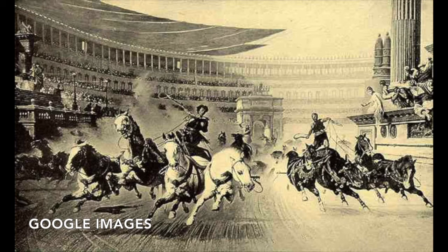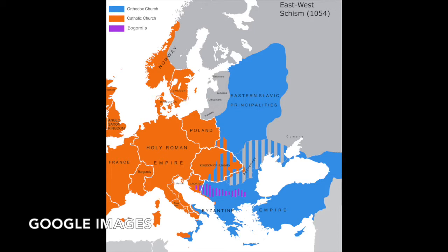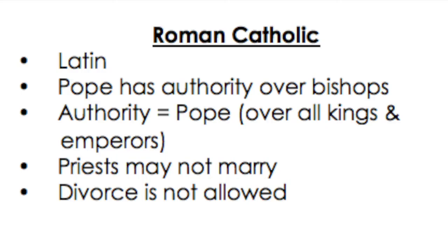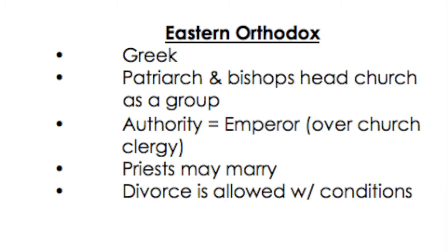The first split of the Christian church took place in 1054 CE, and is now known as the Great Schism. The church split into two halves. The west was now part of the Roman Catholic Church, and the east was now part of the Eastern Orthodox Church. The Roman Catholic Church was Latin, and the Pope had authority over the bishops and over all kings and emperors, while priests may not marry and divorce was not allowed. The Eastern Orthodox Church was Greek, and the patriarch and bishops headed the church as a group, and the emperor had authority over the church clergy. In the Eastern Orthodox tradition, priests may marry and divorce is allowed under certain conditions.